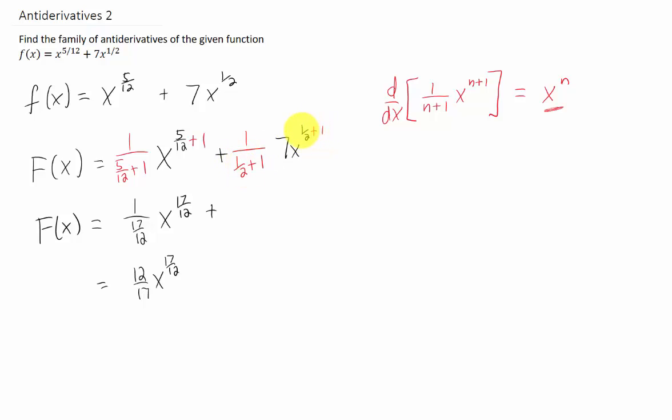We know that 1 half plus 1 is 3 halves. So we can take this 7 and say that's the numerator, and our denominator is 3 halves, and we have x to the 3 halves power. Doing the old copy dot flip on these fractions gives us 14 thirds is our coefficient, x to the 3 halves.